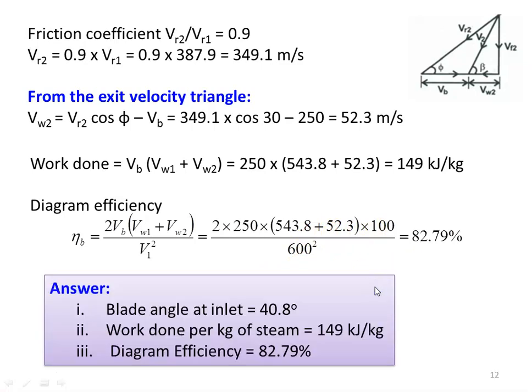Results for Example 5: blade angle at inlet is 40.8 degrees, work done per kg of steam is 149 kJ/kg, and diagram efficiency is 82.79 percent.